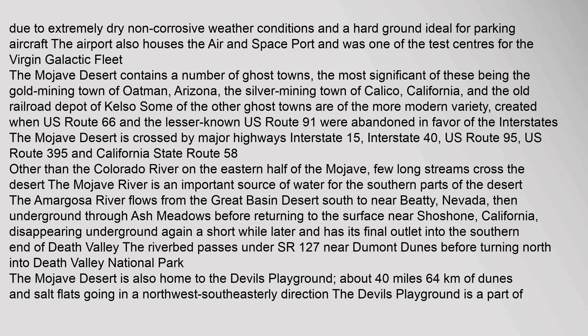Other than the Colorado River on the eastern half of the Mojave, few long streams cross the desert. The Mojave River is an important source of water for the southern parts of the desert. The Amargosa River flows from the Great Basin Desert south to near Beatty, Nevada, then underground through ash meadows before returning to the surface near Shoshone, California, disappearing underground again a short while later, with its final outlet into the southern end of Death Valley. The riverbed passes under SR 127 near Dumont Dunes before turning north into Death Valley National Park.